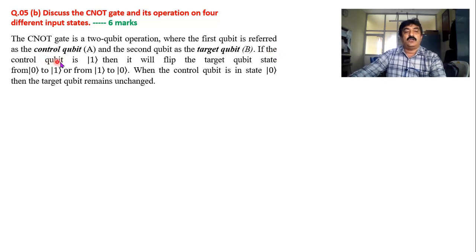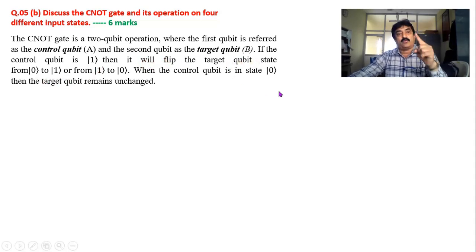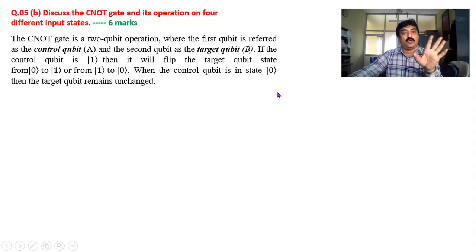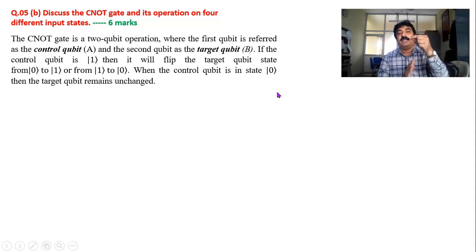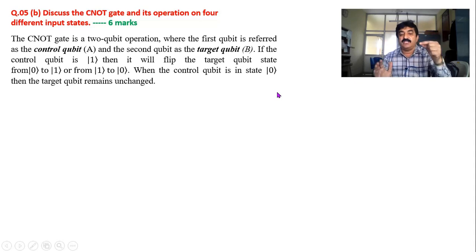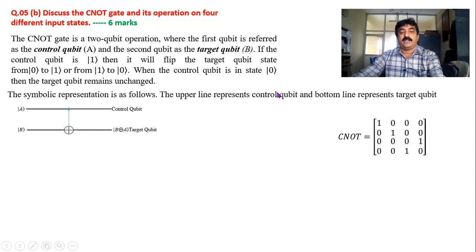If the control qubit is one, then only it will act on the target. How it acts: it will flip the target from one to zero or zero to one. Control will work only when it is in the one state. If it is in zero state it won't work. So if the target is one it will change to zero; if the target is zero it will change to one.